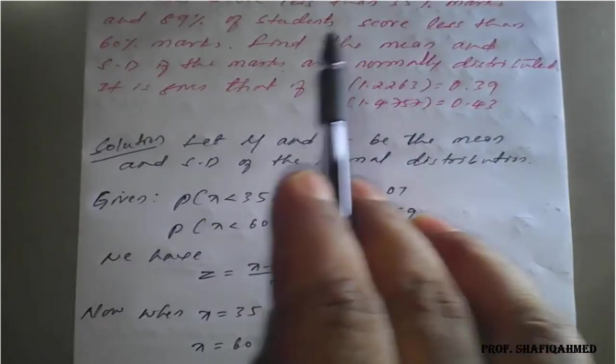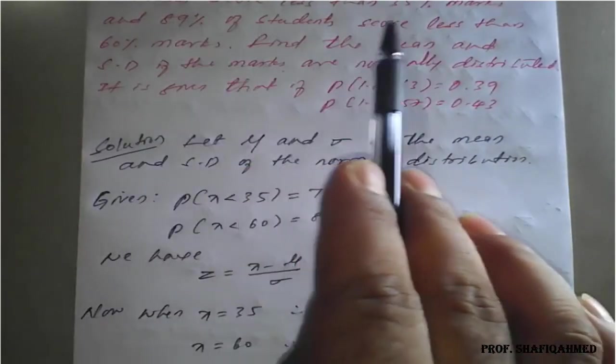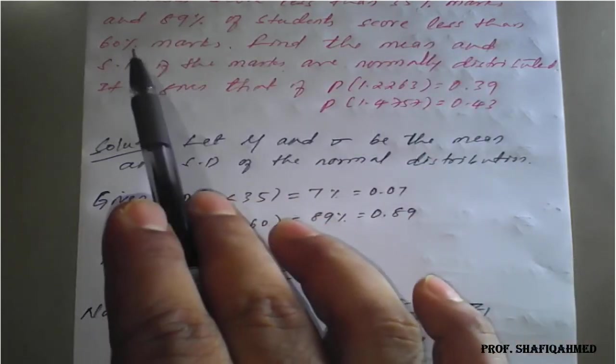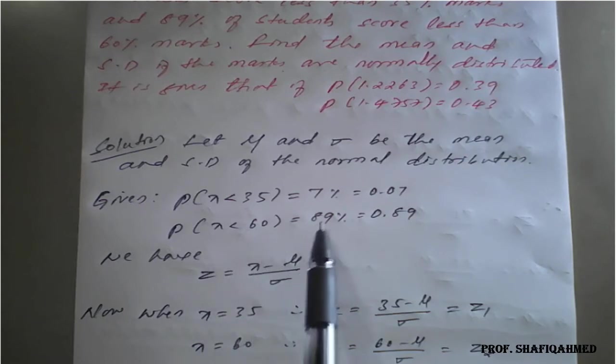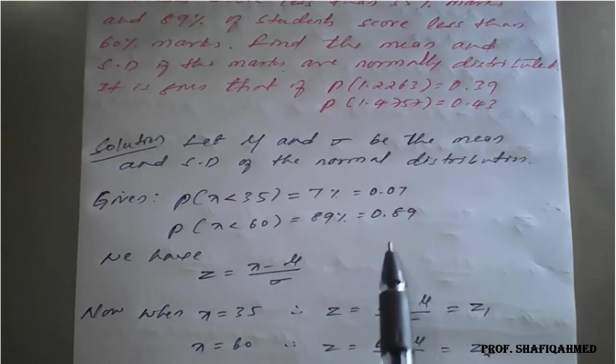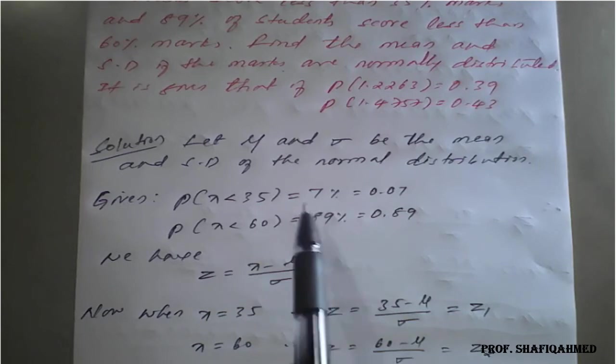Similarly, second continuation. So 89% of students score less than 60 marks. That is, 60% means 60 marks. That is P of X less than 60 is nothing but 89% which is 0.89. So we got this given data from the question.